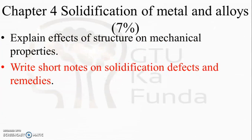Chapter 4 is Solidification of Metals and Alloys, which also contains seven percent of weightage. Do not spend too much time here; just go through the key questions: explain the effects of structure on mechanical properties, and write short notes on solidification defects and their remedies.